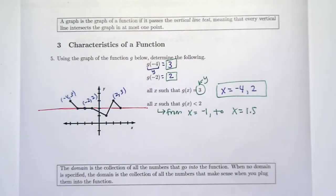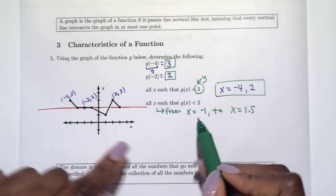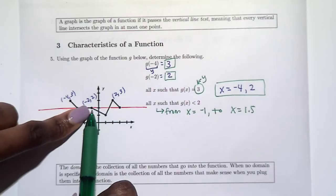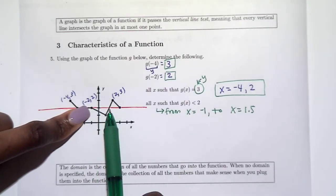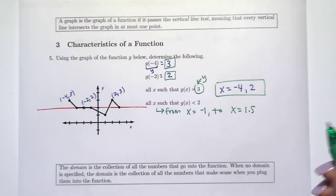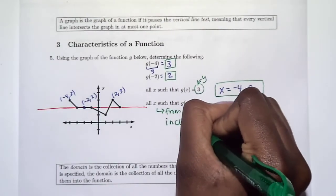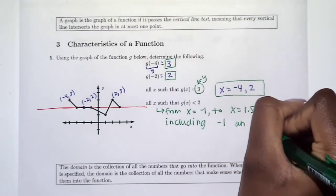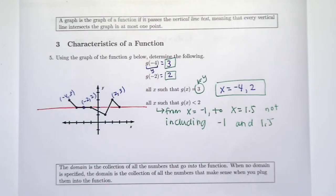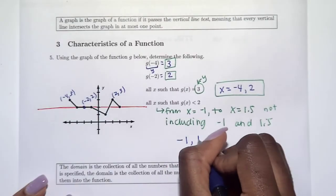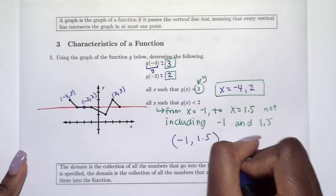Make sure you agree that the graph is less than two on the y-axis between x equals negative one and one point five. But at x equals negative one, the graph actually equals two, and the inequality doesn't say less than or equal to. Similarly, at one point five it equals two, so we don't include those endpoints. In interval notation, we use parentheses: the answer is the open interval from negative one to one point five.